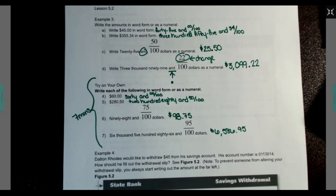Take a moment to compare your answers for questions four through seven in the try on your own and make sure they match up. On the next slide, you're going to see a drag and drop on the order of which the withdrawal slip process is. Make sure you match them in the right order. Good luck.